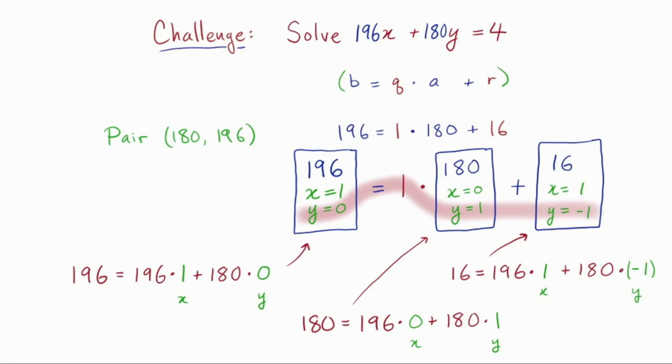So we can figure out what to write on the last card by just picking the thing that makes the equations true. So for example, y on the last card needs to be negative 1, because if I take 1 times 1, that's what I need to add to it to get 0. Similarly for the x value. So pause the video here and verify that.